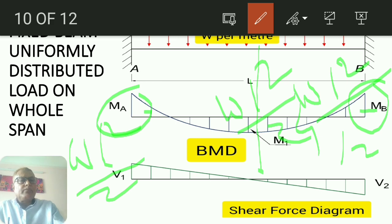Shear force will be linear variations equal to the support reactions. Maximum at the supports, and it will be gradually reduced to 0 at mid. Gradually linear variation for the shear force diagram.